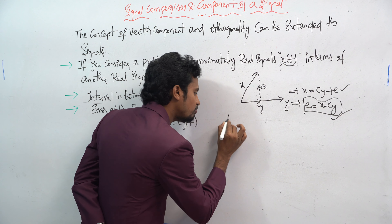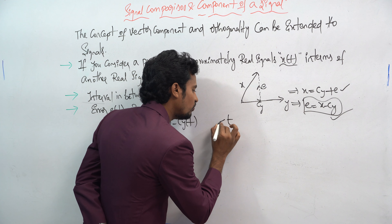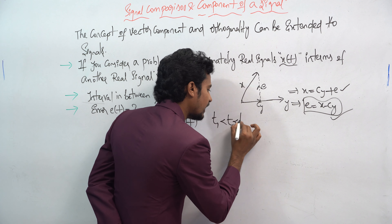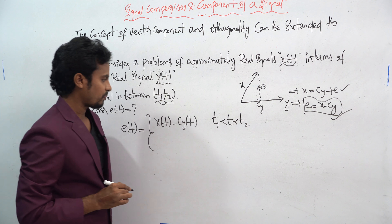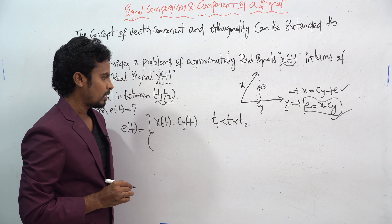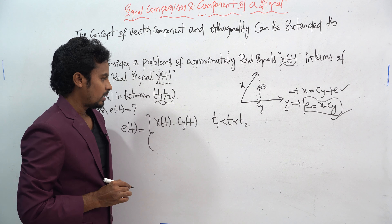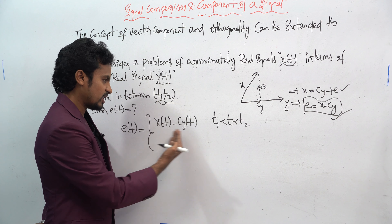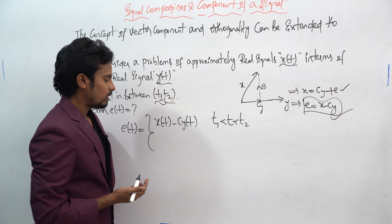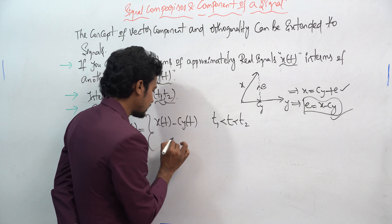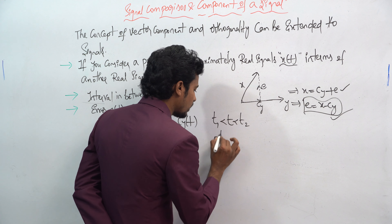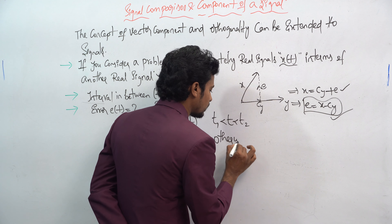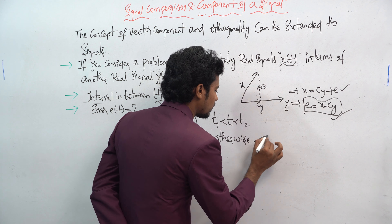Here the time period t spans the interval from t1 to t2. If we are outside this range, the error is 0 — that is, 0 otherwise.